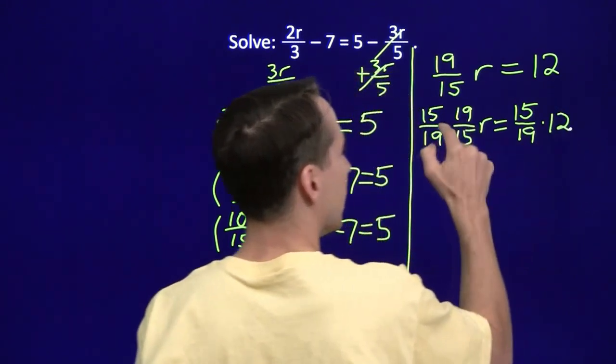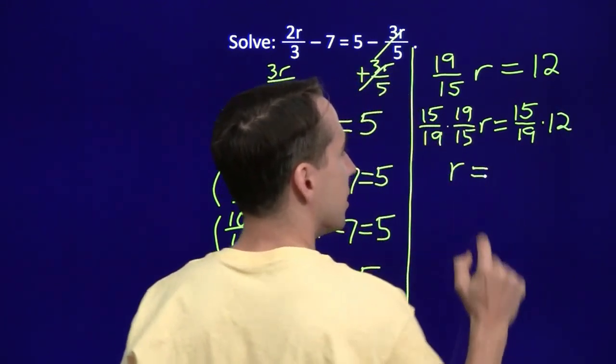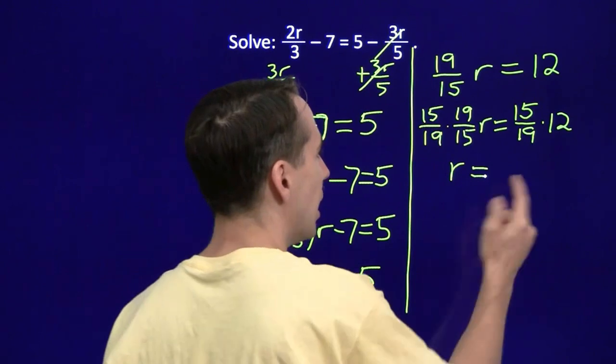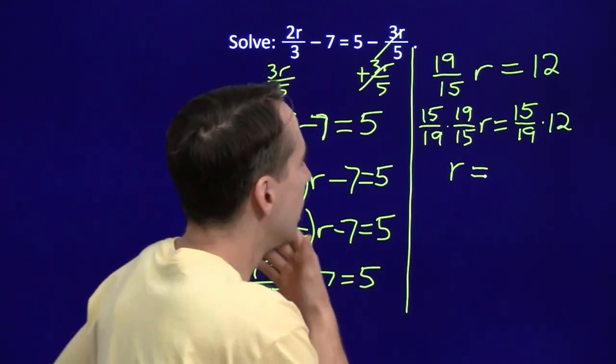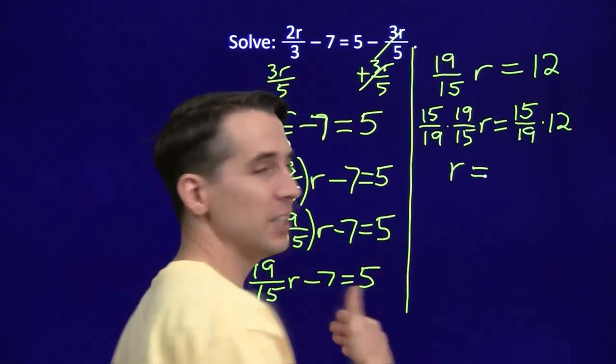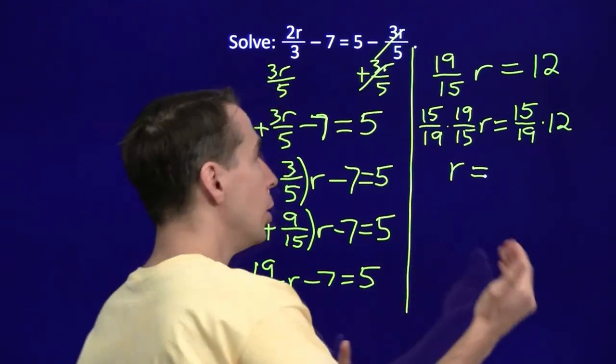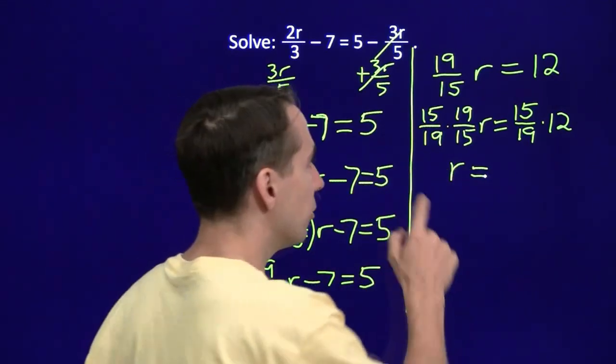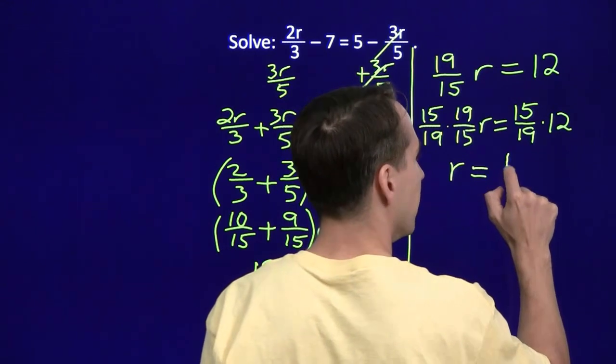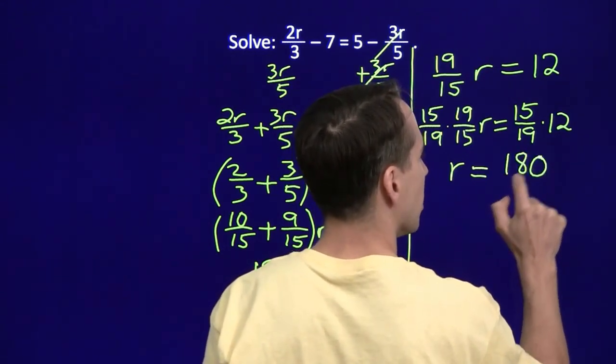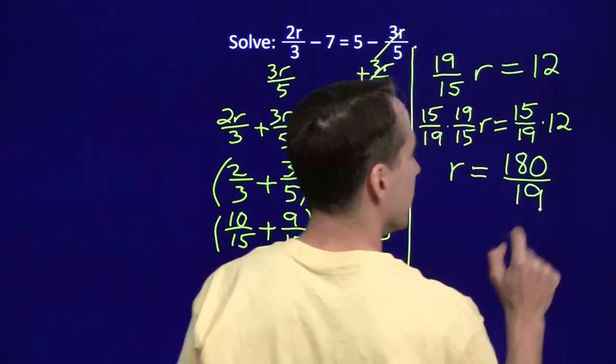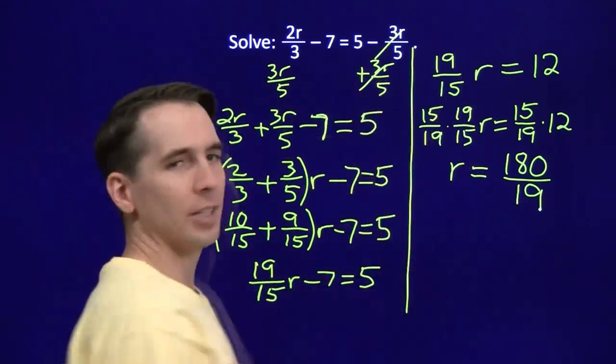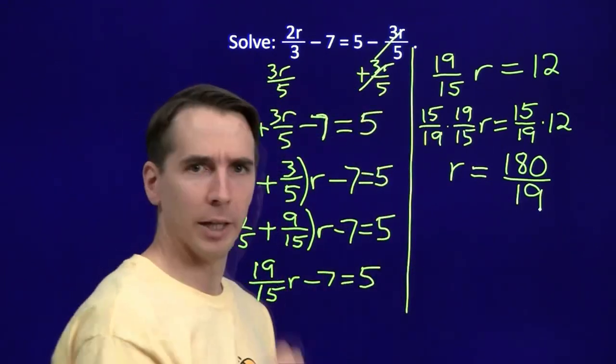So over here, we'll have r all by itself. And here we have 15 times 12 over 19. So let's see, how are we going to do that? 15 times 12? Well, 15 times 10 is 150. 2 times 15 is 30. So 15 times 12 is 150 plus 30 is 180 over 19. And yeah, I'll let you stick that one back in and check it all by yourself.